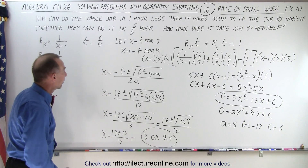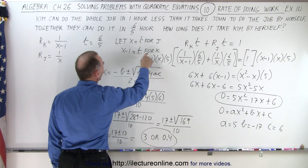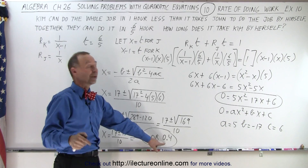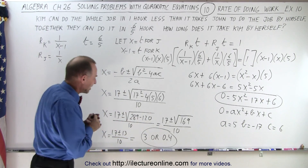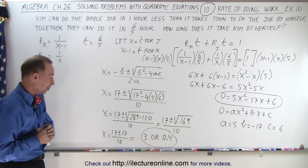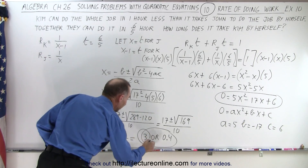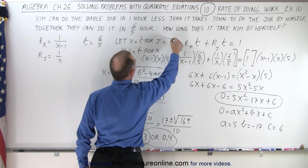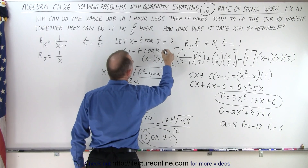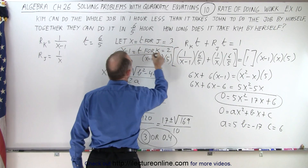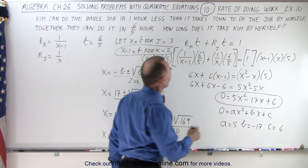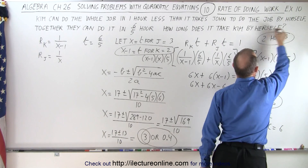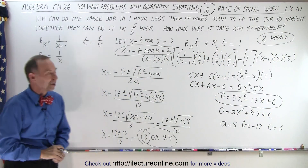Now, do they make sense? We have x equals the time for John and x minus 1 equals the time for Kim. If we take 0.4 and subtract 1 from that, we get negative time, which is not possible — you can't do jobs in negative time. So the only possible answer is 3. Therefore x equals 3 hours for John, and x minus 1 equals 2 hours for Kim. Since we're looking for the time for Kim, the answer is 2 hours is the time Kim can do the whole job by herself. And that is how it's done.